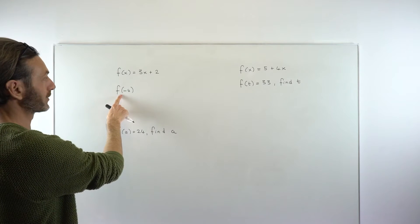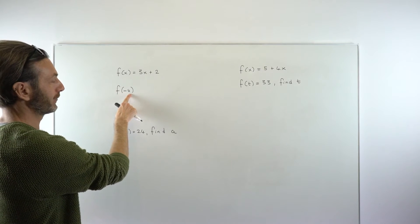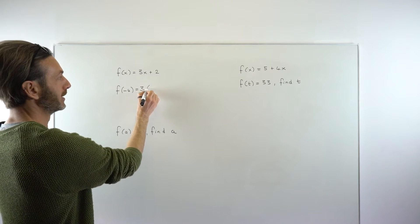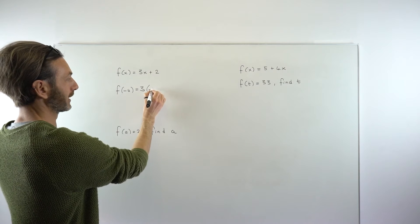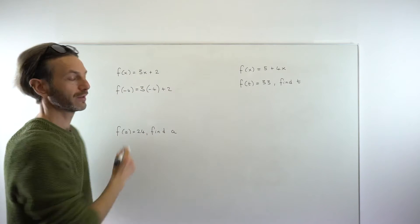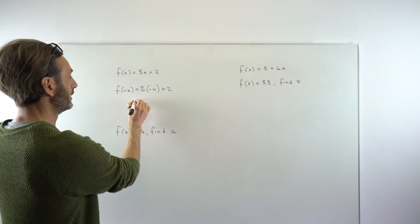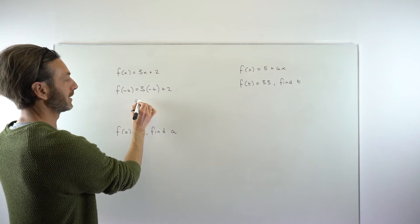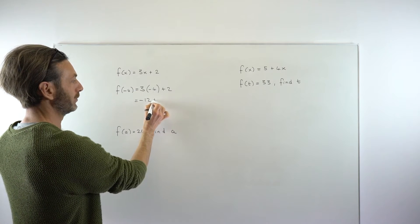In this case, they want us to evaluate f of minus 4. So that literally just means replacing the x with minus 4. So instead of 3x plus 2, we're going to get 3 times minus 4 plus 2. Remember, these are multiplying, so it's 3 multiplied by minus 4. And it's just an evaluation question. You're just working this out as a number. 3 times minus 4 is negative 12 plus 2.